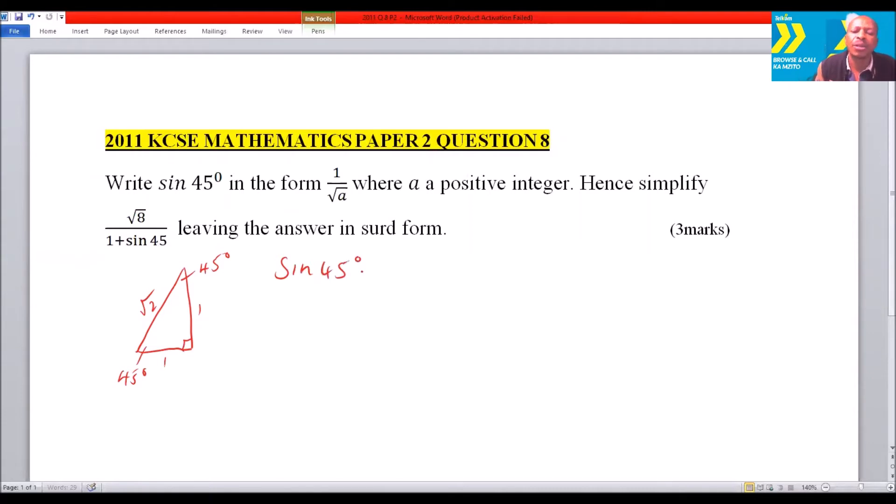Sin, we know, is equal to opposite over hypotenuse. So we have our opposite is 1 divided by the hypotenuse which is √2. And therefore, once we have our angle 45°, we can say that sin 45° = 1/√2.